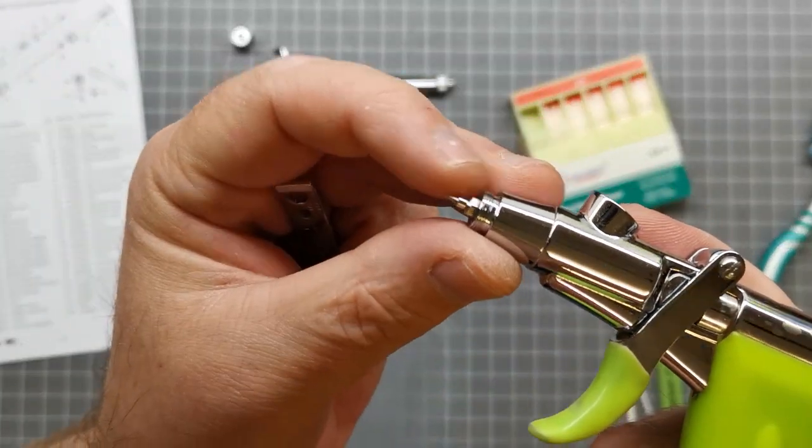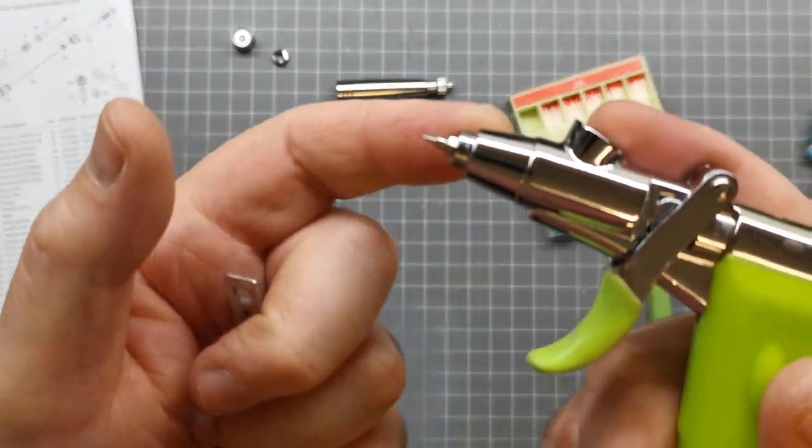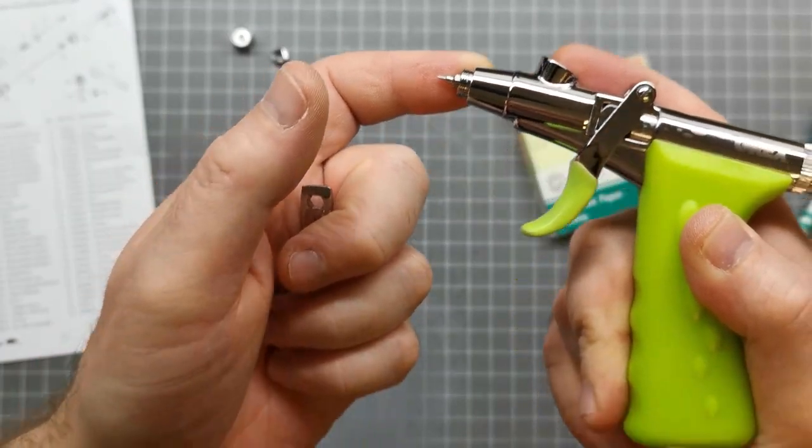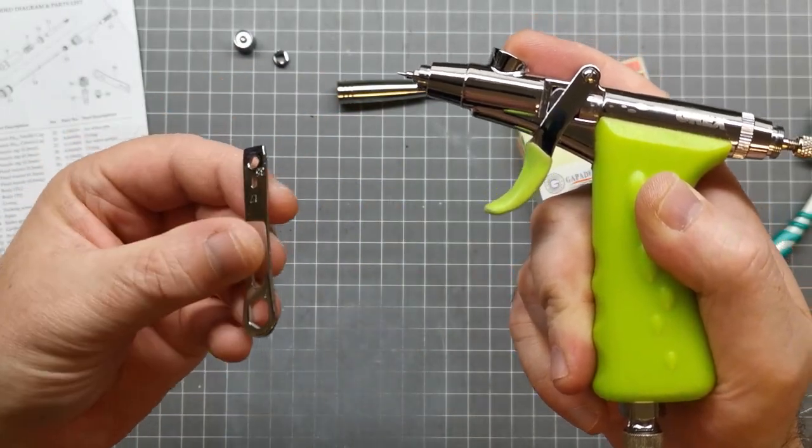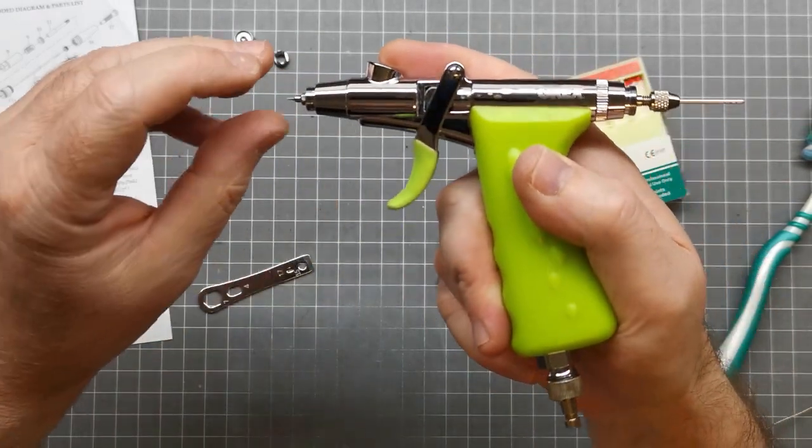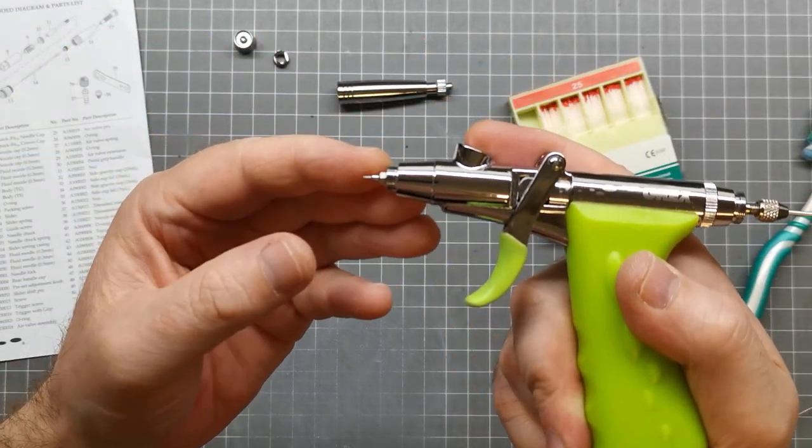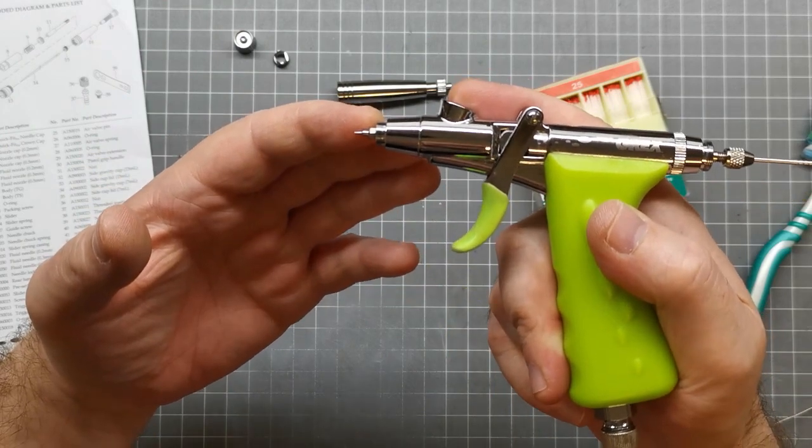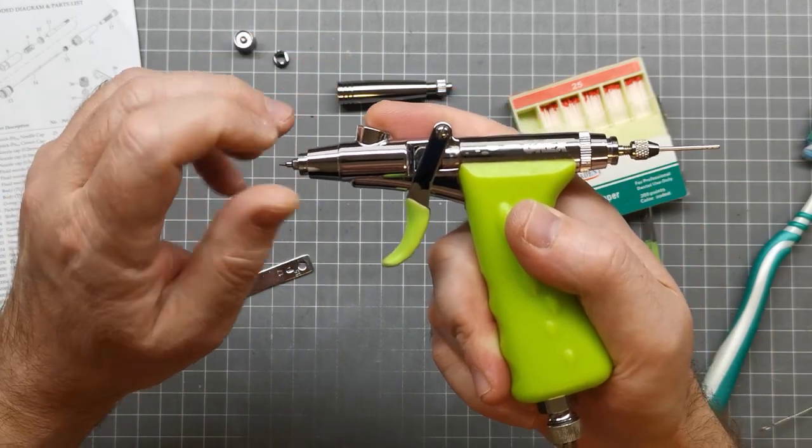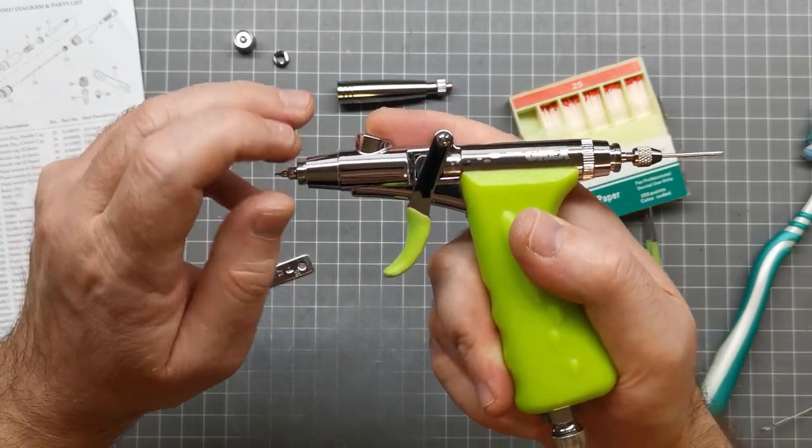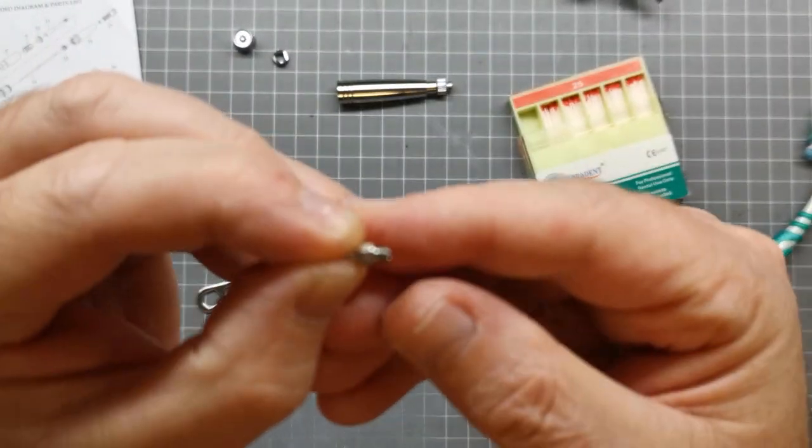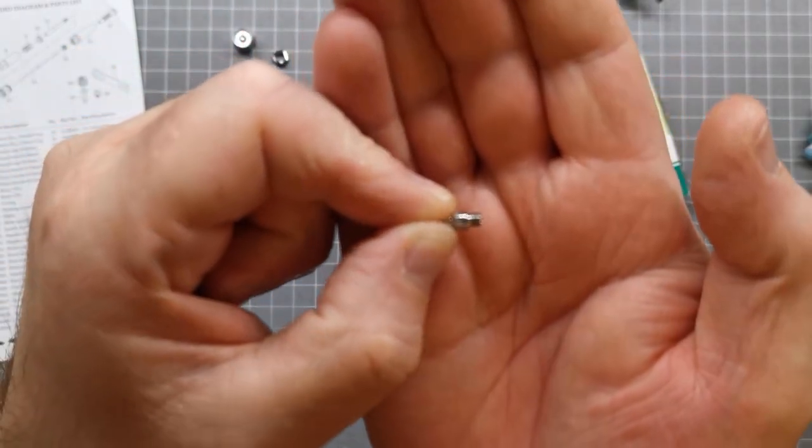The next bit is the nozzle itself. Depending on your airbrush, these things vary in size, but generally they're pretty small and difficult to clean. With this airbrush, you get a really good spanner with it. You just want to undo it. Now, you never, ever want to over-tighten these. I made a mistake years ago where I over-tightened it and the threaded part of the nozzle got stuck in the airbrush. You can see there is a bit of a thread there.